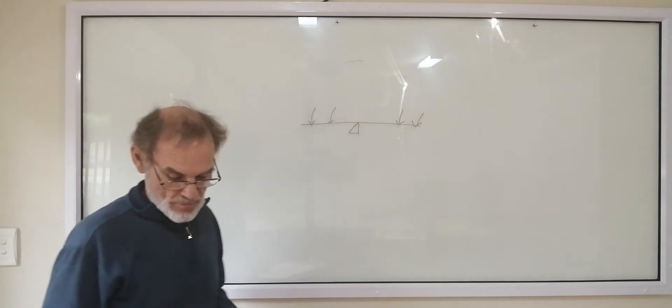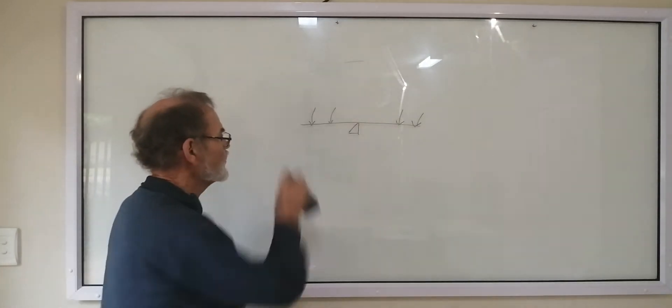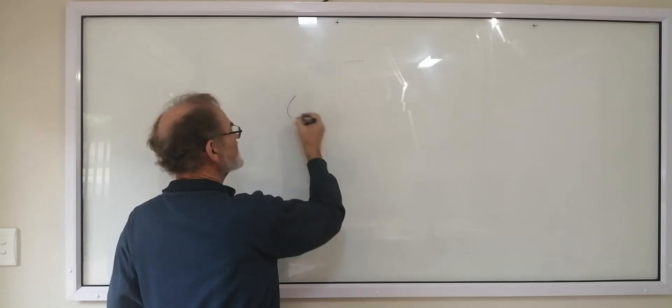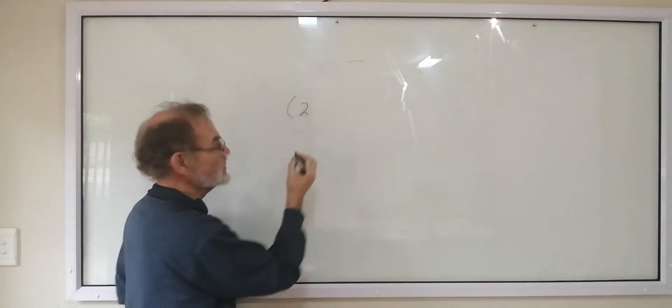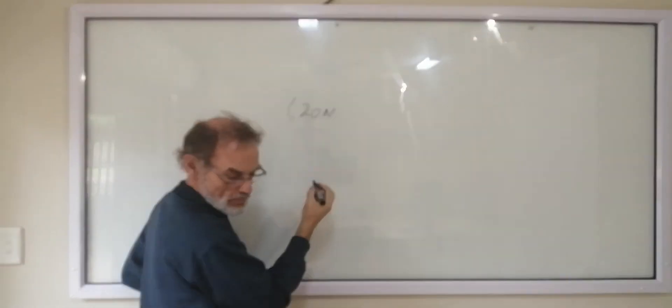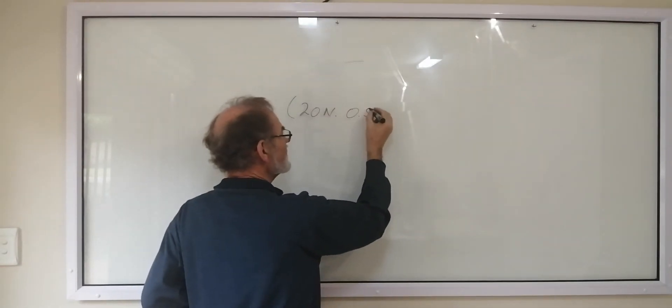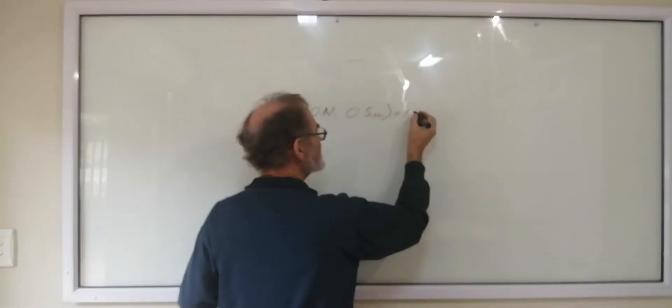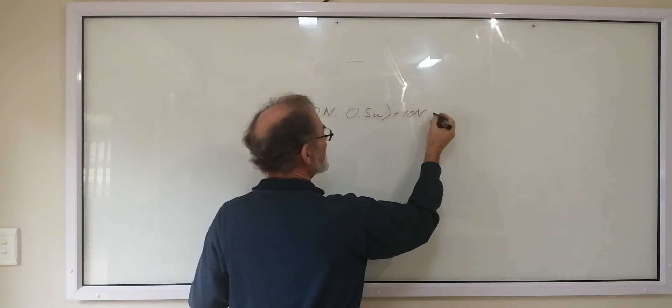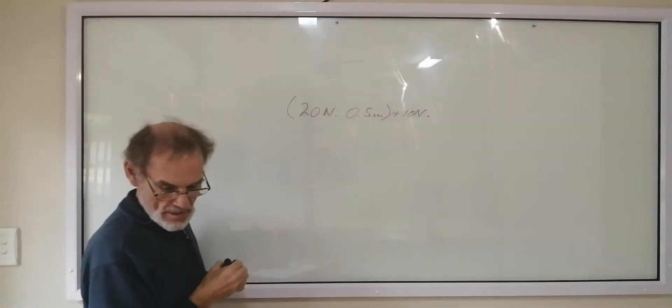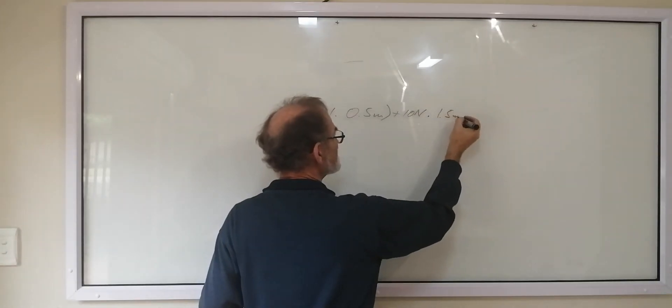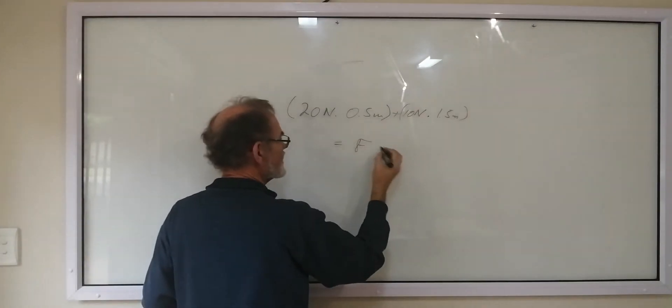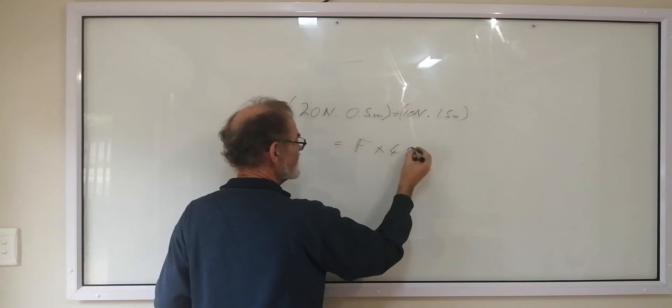If you have a look at example 4.1, 4.1 gives you a diagram there, and then from the diagram you get this equation. So which is 20 newtons multiplied by 0.5 meters plus 10 newtons multiplied by 1.5 meters. And this is equal to a force times 4.5 meters.